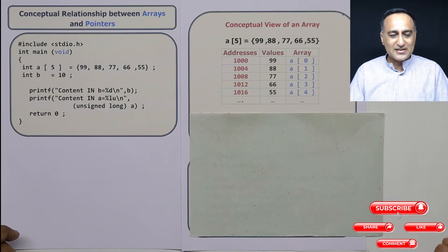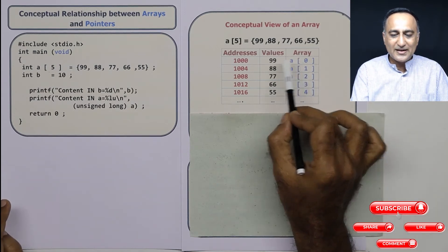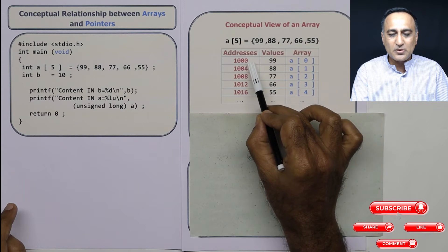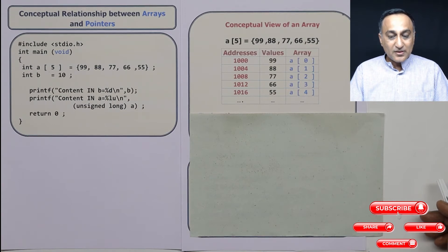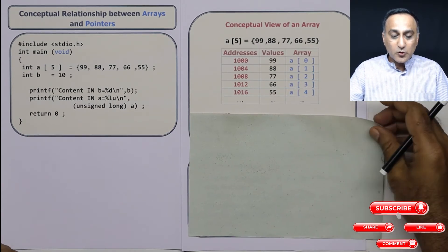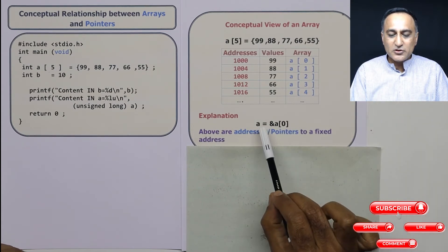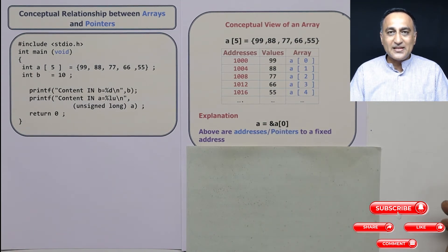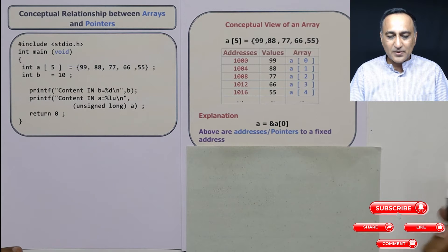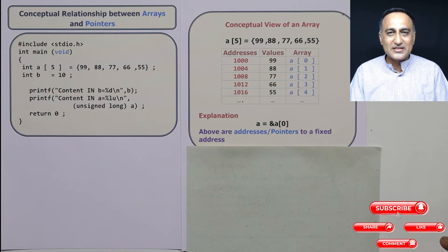The implication of this is, the name of the array refers to the address of the zeroth element, in this case happens to be 1000 or what your compiler decides to do when you actually run it. Now there are a few things you need to very clearly know now. The first thing is, when I refer to simply A or address of A of zero, they are basically the one and the same. Now we all know that addresses and pointers mean the same thing.